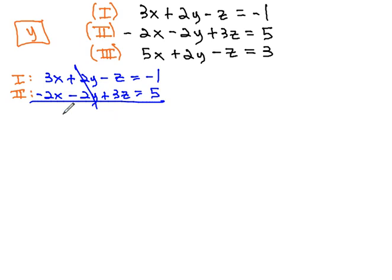Combining those together, the y's eliminate and we're just left with x plus 2z equals 4. I'm going to label this equation equation A. We will come back to it in just a minute.